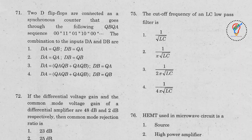Question 71: Two D flip-flops are connected as a synchronous counter that goes through the following QB QA sequence: 00, 11, 01, 10, 00. The combination of the inputs DA and DB are — so the given question involves D flip-flops.